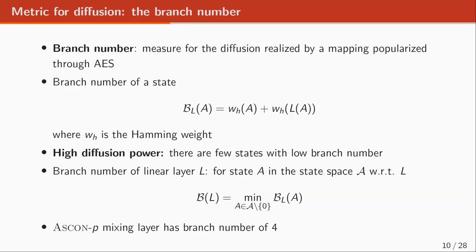The branch number is a metric for diffusion that measures the diffusion realized by a mapping, popularized through AES. We can generalize this notion to a state. The branch number of a state corresponds to the sum of the Hamming weight of a state plus the output obtained after applying the linear mapping to the state. A linear mapping has high diffusion power if there are few states with low branch number. The branch number of a linear mapping is the minimum over all states of the branch number of a state. The mixing layer in ASCON has a branch number of four.